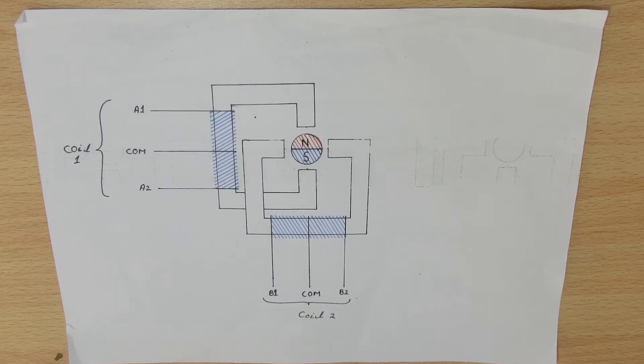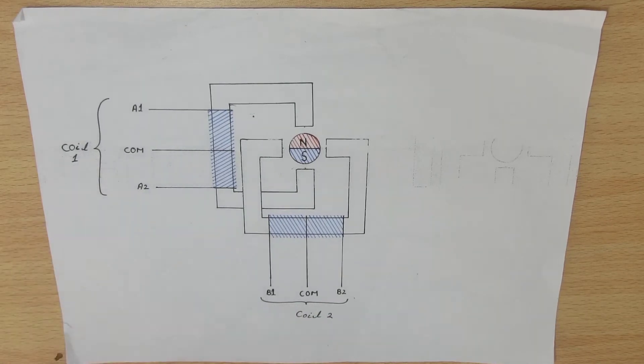...we can run them like bipolar stepper motors. But in 5 wire motors, the common wires are internally connected. So the motor is strictly unipolar.